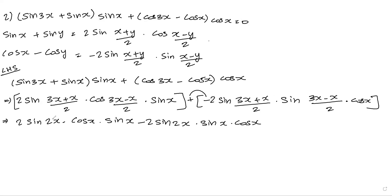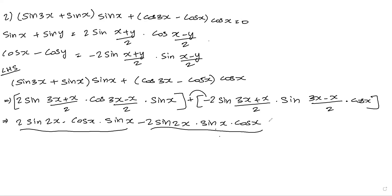If we look at the total terms, they are the same: 2 sin 2x into 2 sin 2x, with sin x into sin x and cos x into cos x. When we subtract, the total gives equal to 0. So 0 is our answer.